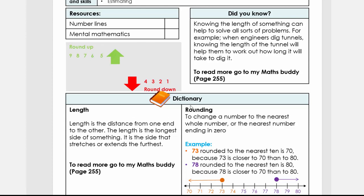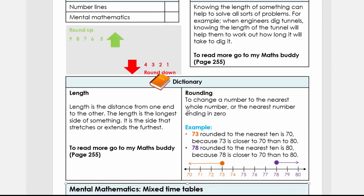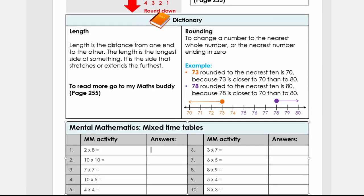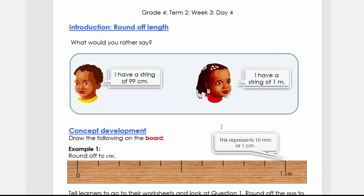Then we're going to do our mental maths activity, so you're going to ask 10 questions. It's mixed times tables and they're going to answer it. You're going to pause, and then I'm revealing the answers. Mark and then we can carry on with the next part of the lesson.